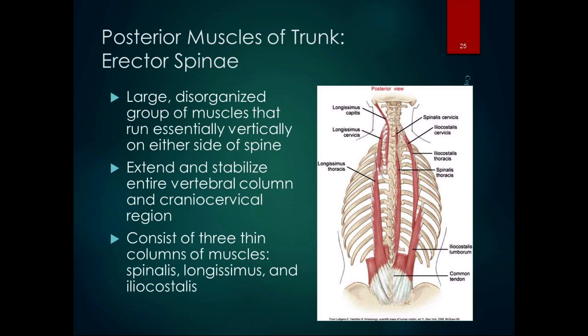The posterior muscles of the trunk include the erector spinae — described in the book as a large, disorganized group of muscles running essentially vertically on either side of the spine. As a group they extend and stabilize the vertebral column and cranial-cervical region. There are three columns: the spinalis (most medial, closest to the spine), the longissimus (the longest), and the iliocostalis (from the ilium to the ribs). Their names describe them: spinalis near the spine, longissimus the longest, iliocostalis from ilium to ribs.